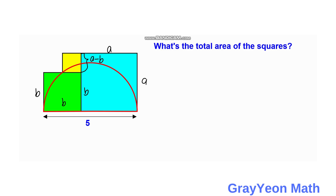Next, we consider the radius of the semicircle. The radius of the semicircle is equal to the sum of the lengths of the two squares divided by two, that is (a + b) / 2.